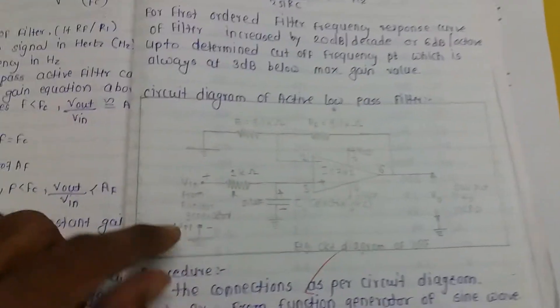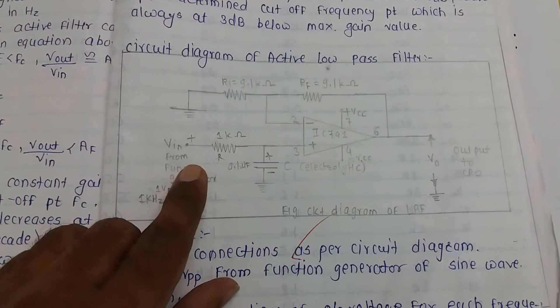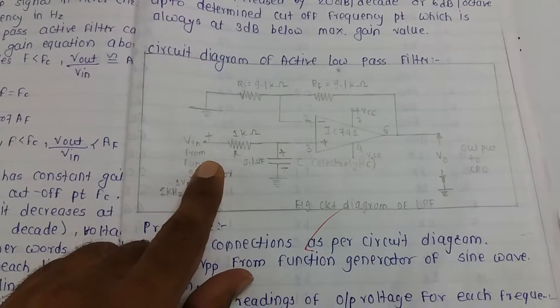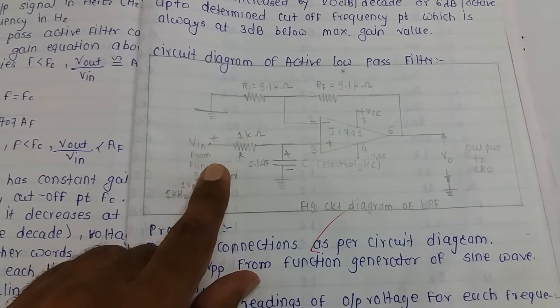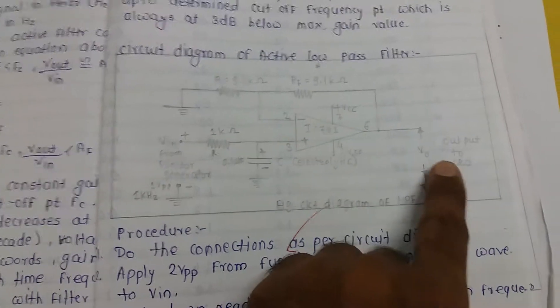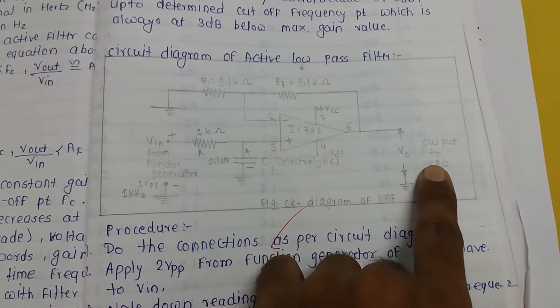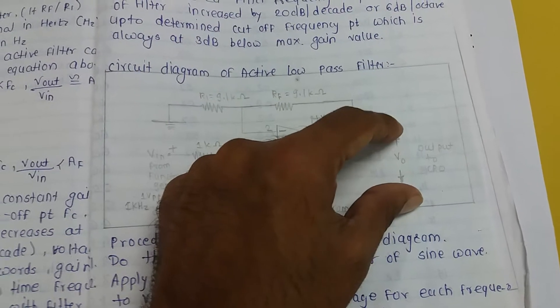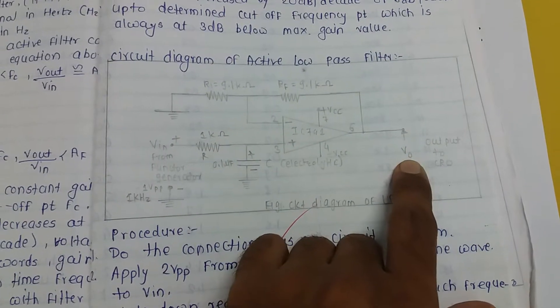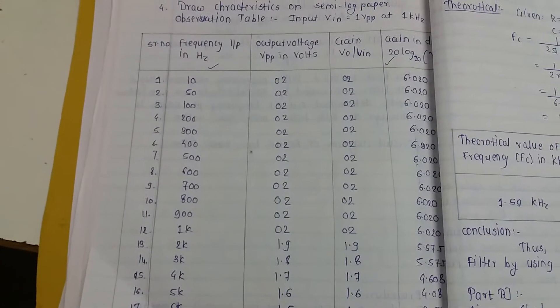In the experiment, you will vary the function generator frequency — 10 Hz, 20 Hz, 50 Hz, 100 Hz, and higher — and measure the output on the CRO. You will measure the peak-to-peak voltage value from the CRO at each frequency setting.